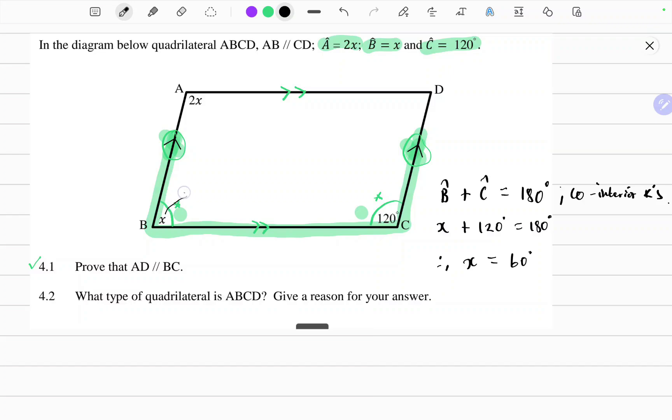So now we have angle x to be 60 degrees. So automatically this becomes 120 degrees because this is twice the size of x. So this angle is 120 degrees and that angle B is 60 degrees.